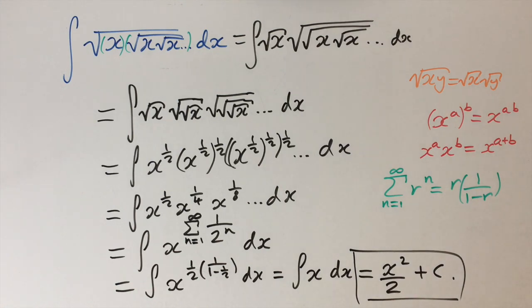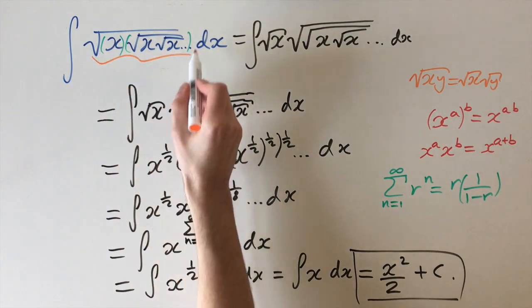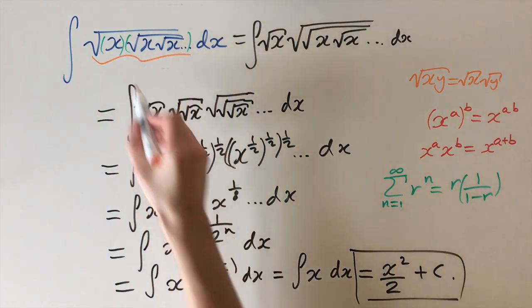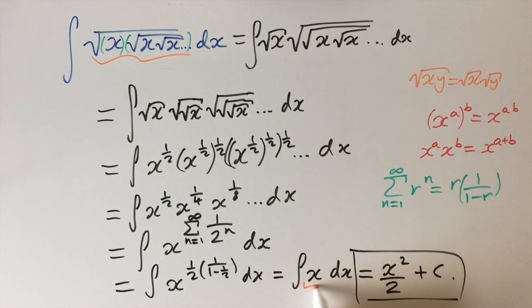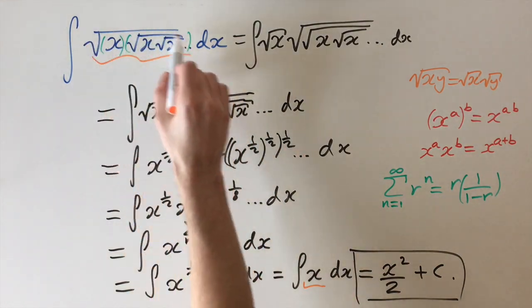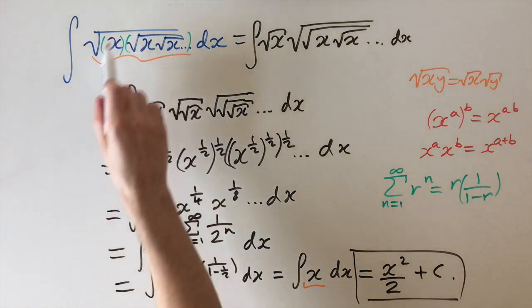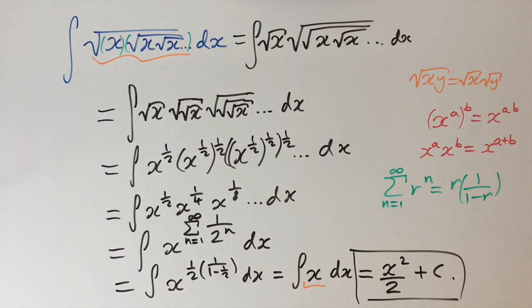Now we're going to look at a second method to solve this integral — one that uses a clever trick and is a little quicker. To recap what we've done: we showed that the expression under the integral, with all the nested square roots, is actually equal to x. The second method is essentially a faster way to show that this infinite expression equals x.